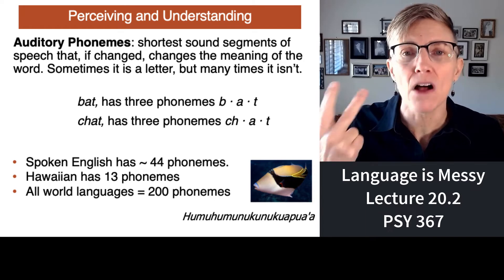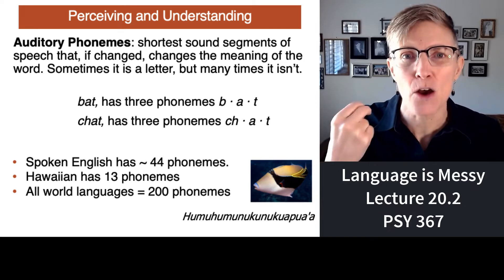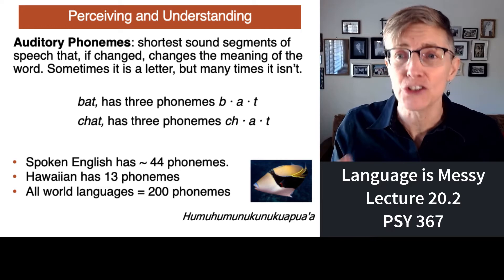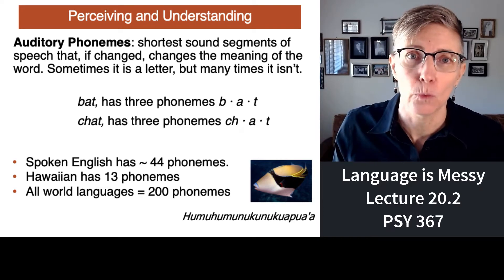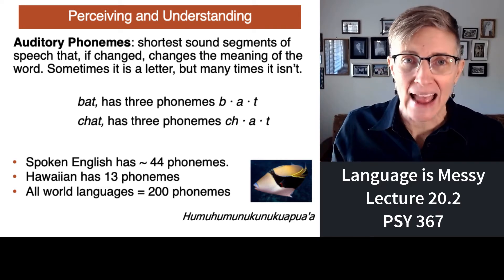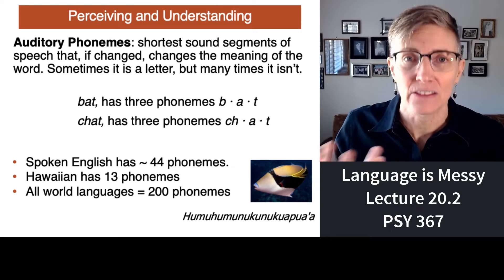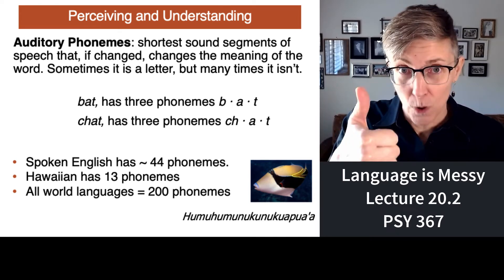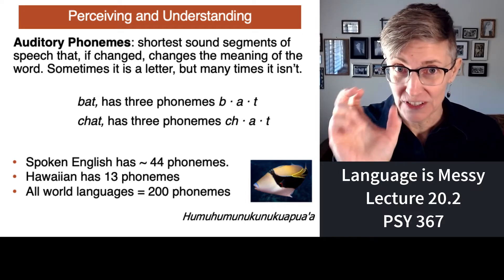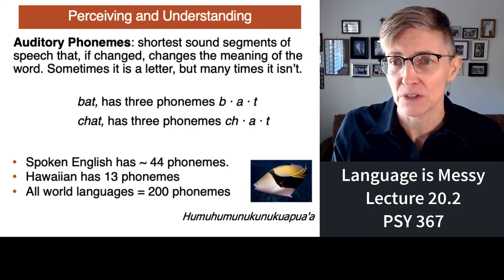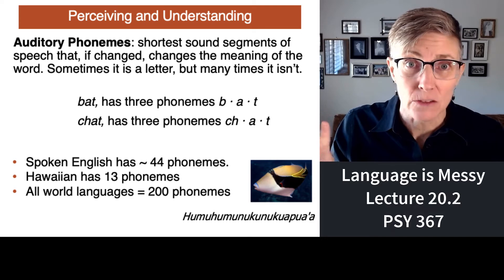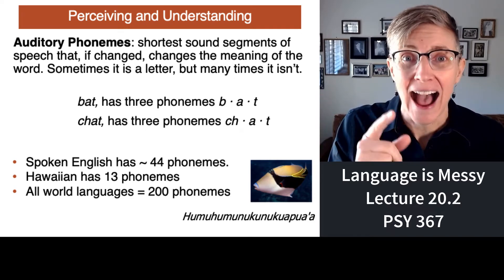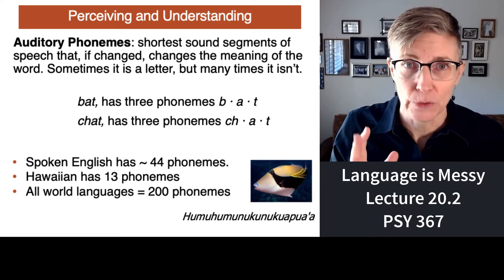A phoneme is the smallest sound segment — the smallest bit of sound that, if changed, is going to change the meaning of a word. So 'bat' has three phonemes: B-A-T, and one morpheme. The French word 'chat,' meaning cat, also has three phonemes: sh-a-t.